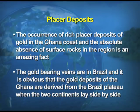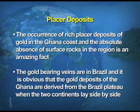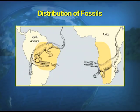Placer deposits — the occurrence of rich placer deposits of gold on the Ghana coast and the absolute absence of source rocks in the region — is an amazing fact. Fossils have also been found across India, Madagascar and Africa and are considered to have striking similarities.